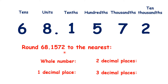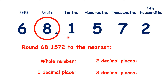Here we have a long decimal number, and we need to practice rounding that decimal to a different number of decimal places. For rounding to the nearest whole number, we find our units, look to our tenths, and because it's a 1, we're rounding down, so we have 68.